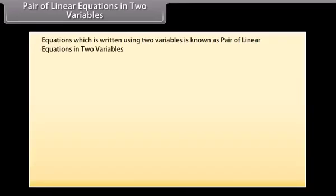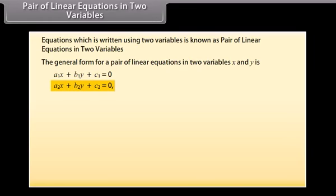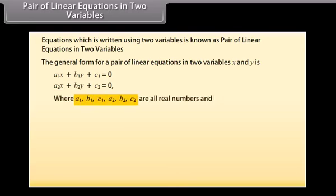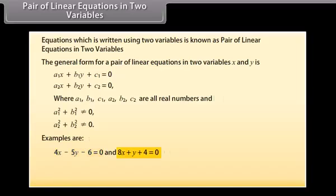Equations which are written using two variables are known as a pair of linear equations in two variables. The general form is: a1x + b1y + c1 = 0 and a2x + b2y + c2 = 0, where a1, b1, c1, a2, b2, c2 are all real numbers and a1² + b1² ≠ 0 and a2² + b2² ≠ 0. Examples are: 4x − 5y − 6 = 0 and 8x + y + 4 = 0; and x + y = 12 and 7 = y.